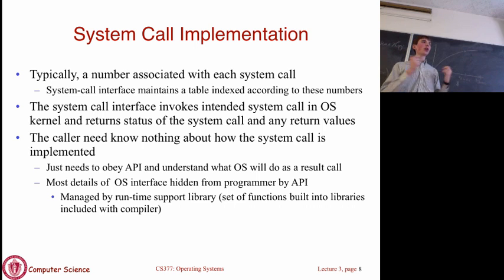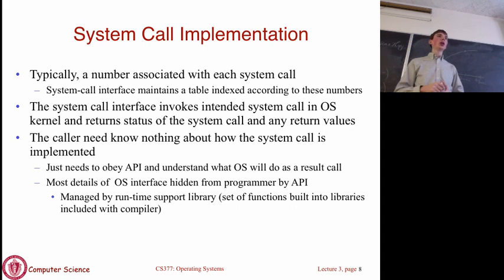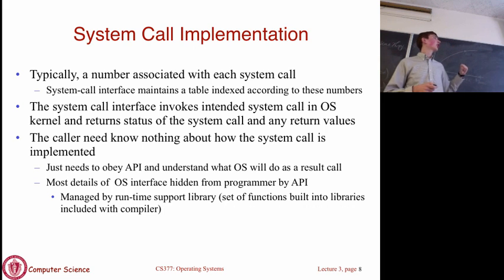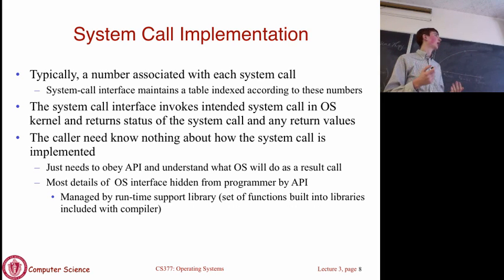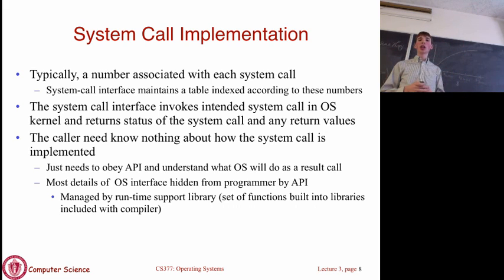Internally, the system has a lookup table where each number corresponds to a specific system call—for example, system call 1 is a read, system call 2 is a write, and so on. When you execute a system call, you're internally saying 'I want to do a system call, here's the number indicating which type.' The caller doesn't need to know exactly how it works; they just need to understand the API. The actual library manages all the lower-level complexities. The kernel looks up the number in the table and jumps to the code for, say, the open system call if you're trying to open a file.